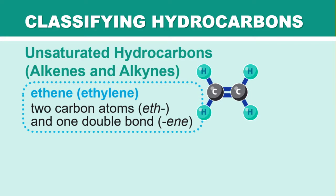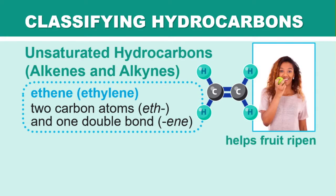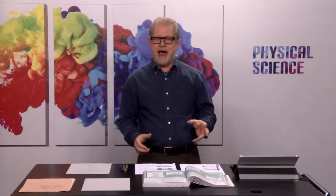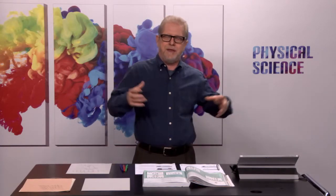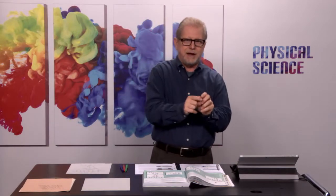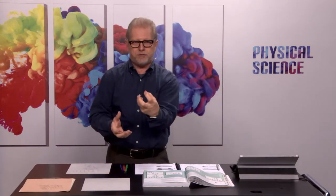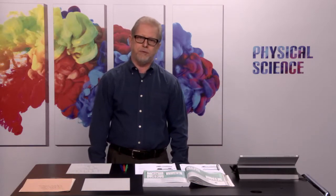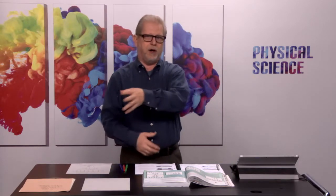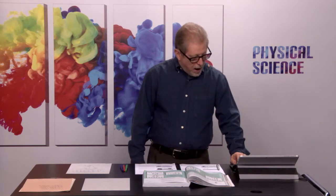Ethene is the technical name; its common name is ethylene. Ethylene is a gas that helps fruit ripen — some fruits give it off as they ripen. That's why putting fruit in a bag makes it ripen faster: a riper banana gives off ethylene gas, and trapping it in the bag activates the ripening process in the other fruits — and also why spoiling spreads.